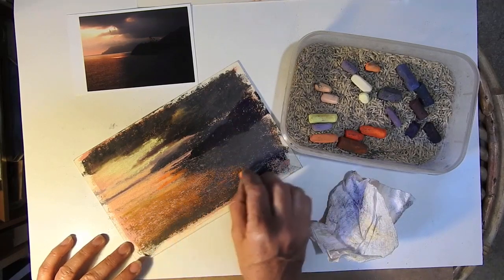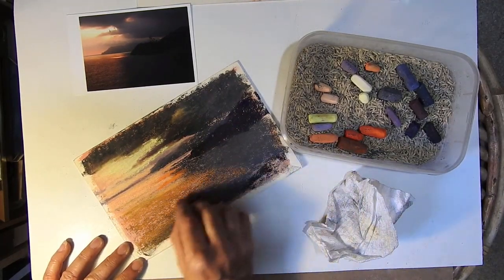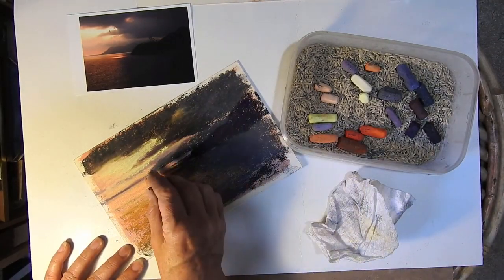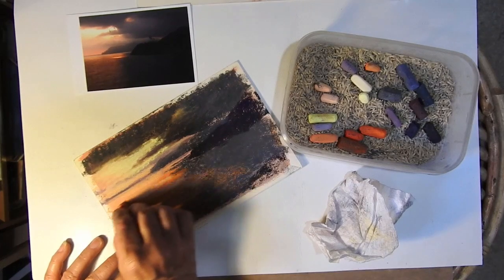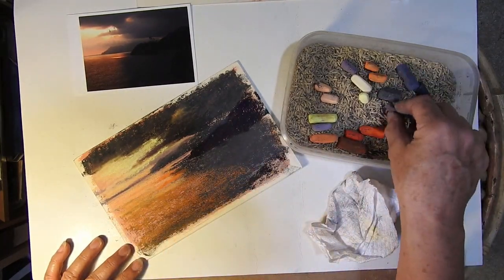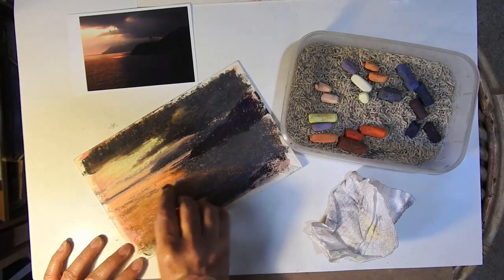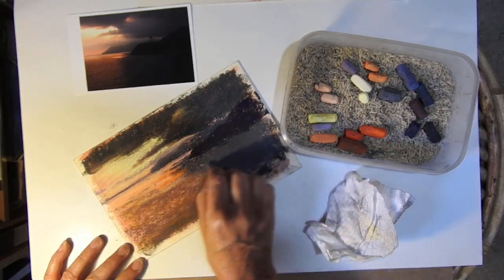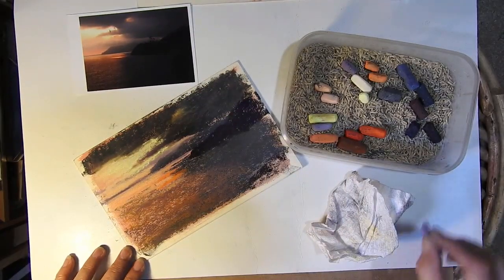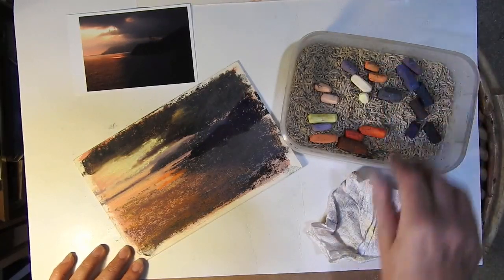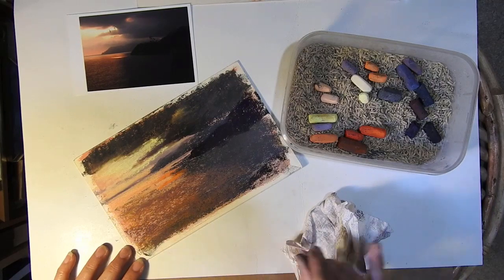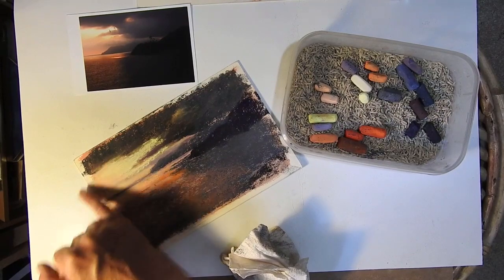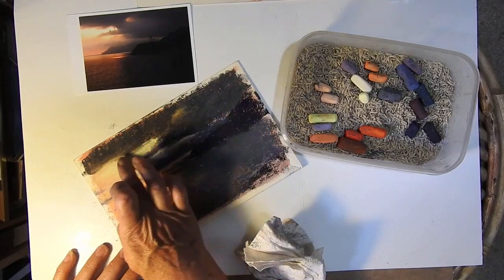And you just get a lovely ripley effect there where that dark's gone on first. And because I've got very sandy, gritty paper there. I'm going to take that a little bit back into there. And I'm also going to go in with a little bit of purple there. Because it's getting a little bit darker. And let's move that... those bits of some... some of the colors out a little bit there in places.